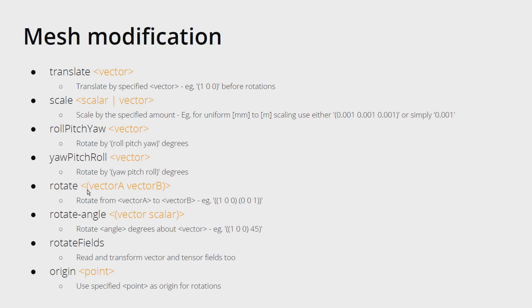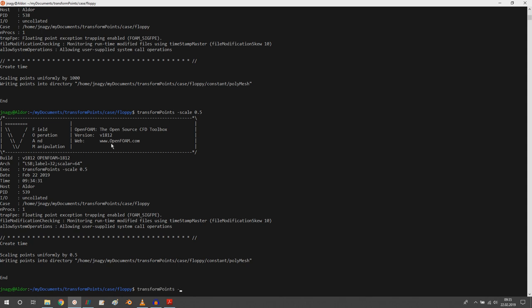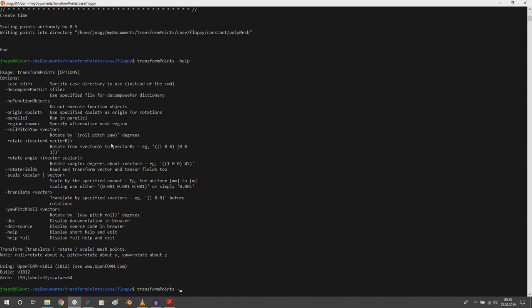Now there are four possibilities to rotate your geometry — useful for both internal and external geometries. The first two are rollPitchYaw and yawPitchRoll, which are very similar: you define the angles with which you want to rotate. Let's start with rollPitchYaw. I'll copy the command from the help output and rotate floppy by 90, 0, and 0 degrees, then press enter.